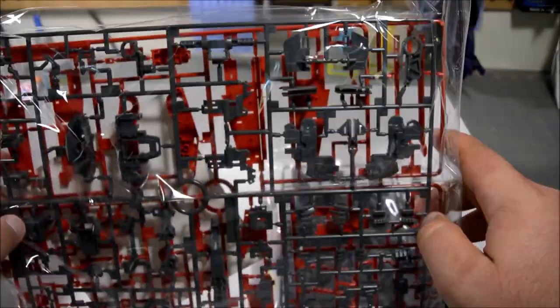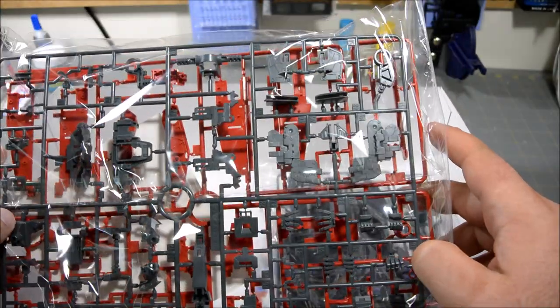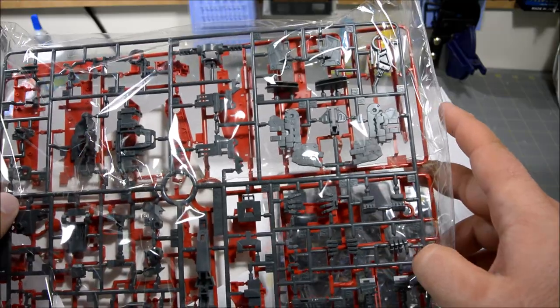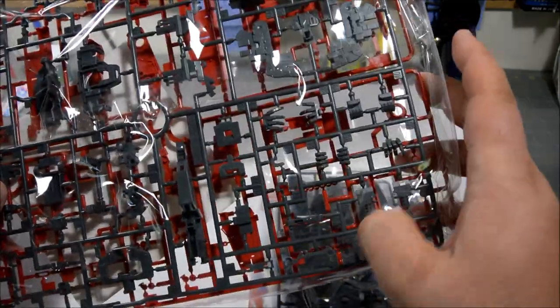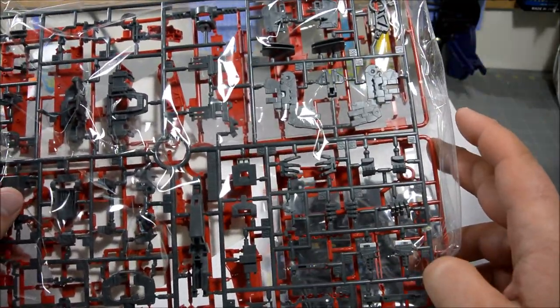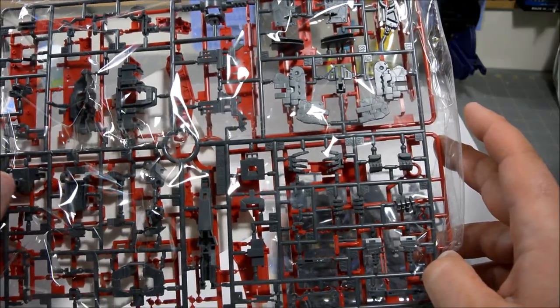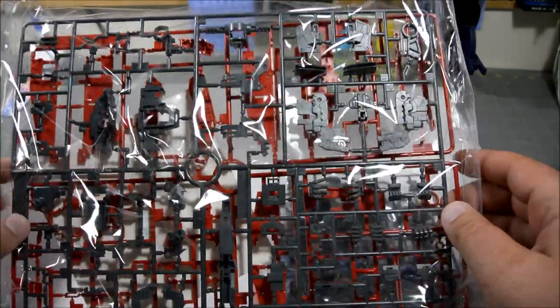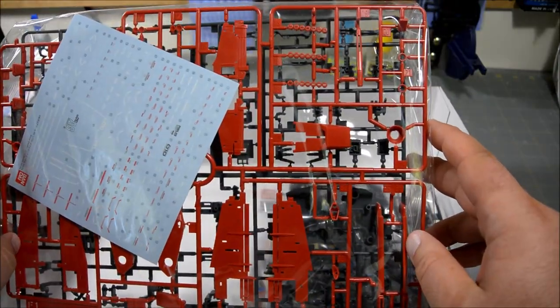Another very large runner, more inner frame stuff. This looks like torso parts, skirt armor parts. We got the hands here and they are the switchable finger hands like has been with most Master Grades lately.